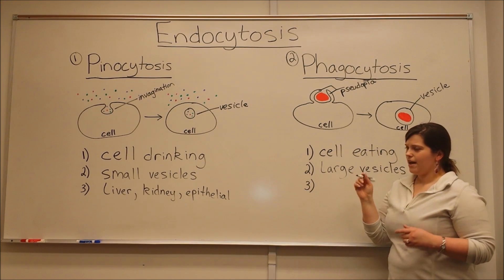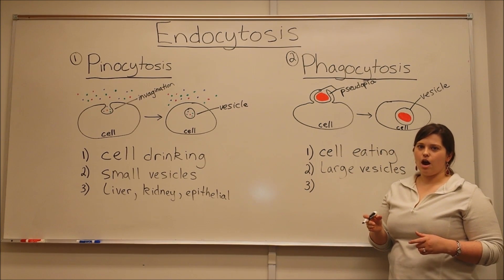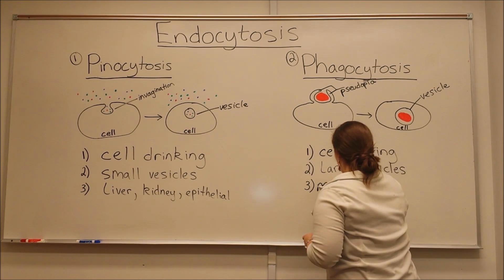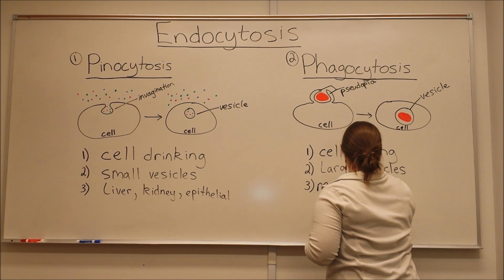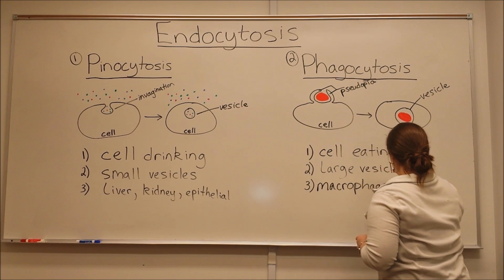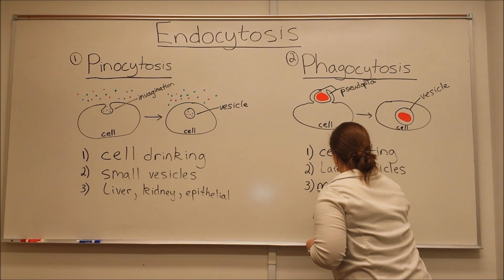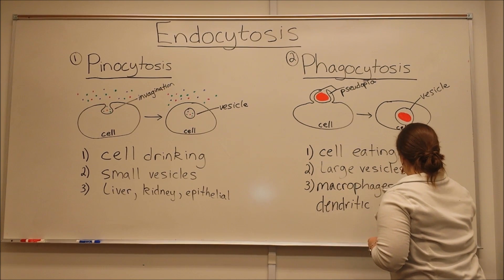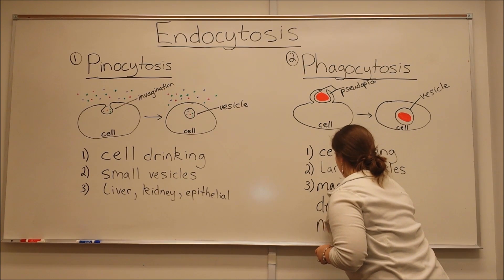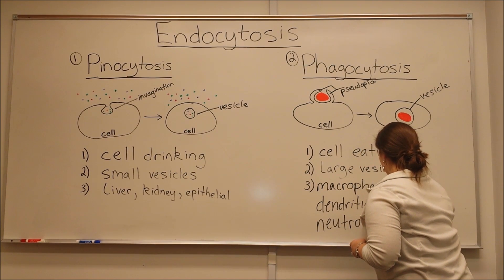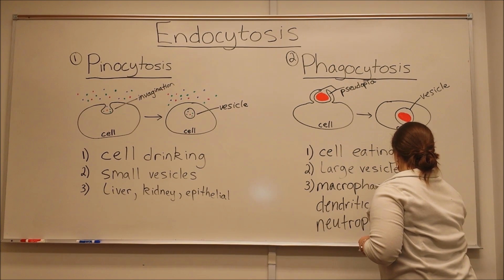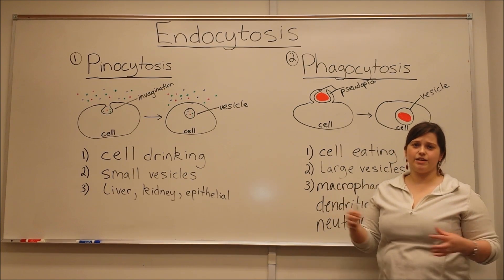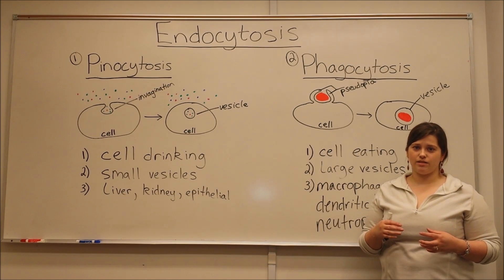The phagocytosis process is very common to different cells of the immune system — specifically macrophages, dendritic cells, and neutrophils. These different cell types can take up bacteria that they recognize or dead cells that they recognize.